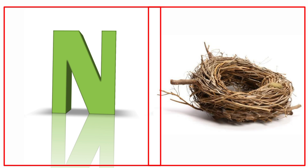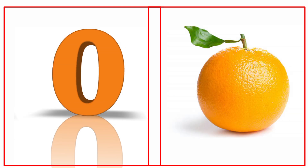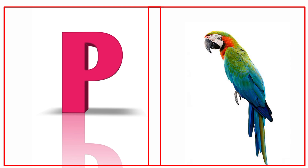N for nest. Nest means ghosla. O for orange. Orange means santra. P for parrot. Parrot means tota.